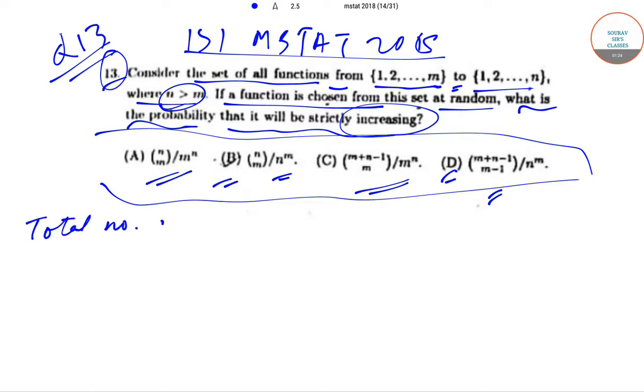Total number of functions will be equal to n^m, since from m elements we are going to n elements. So total number of functions will be n^m. Now we have to find out the number of strictly increasing functions.